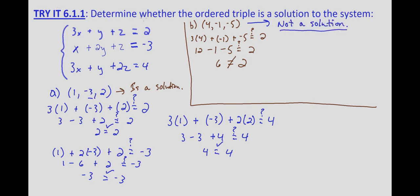So again, to determine whether a given ordered triple is a solution to a given system, we substitute the values for x, y, and z into each equation. If it makes a true statement in all three equations, then it is a solution. And if it doesn't work in any of the three equations, then we know it's not a solution.